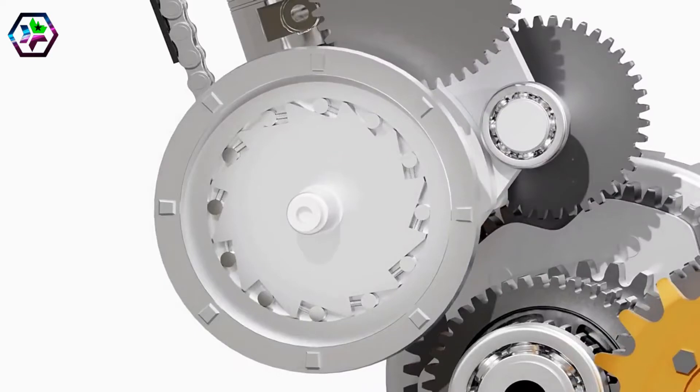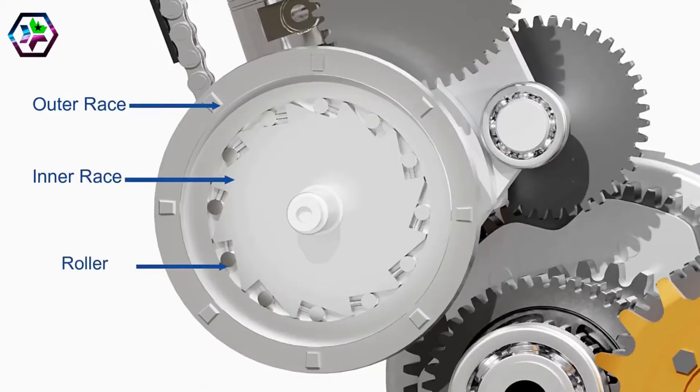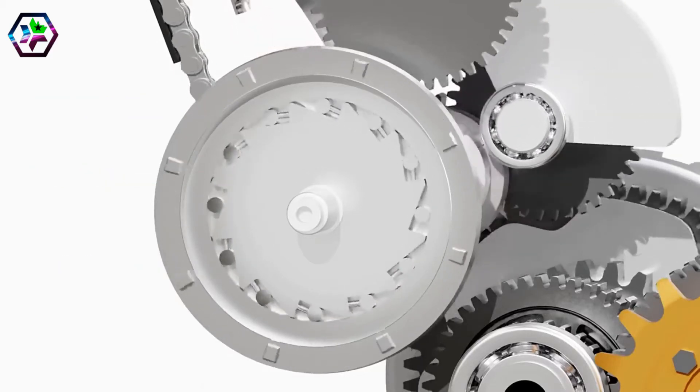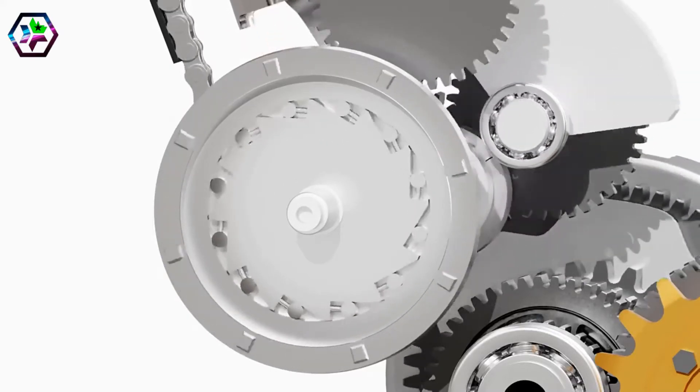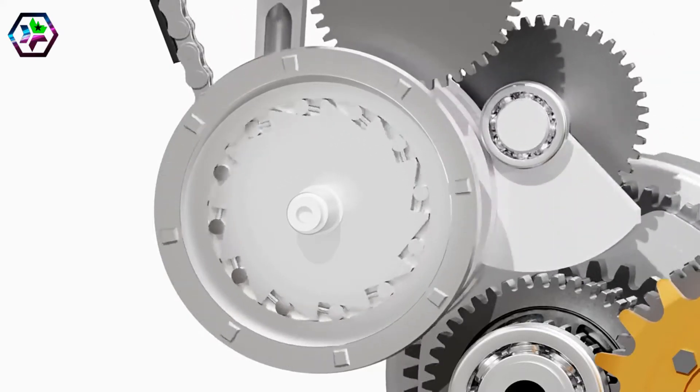The model shown here is of a roller-type one-way clutch. It has an outer race and an inner race with small rollers. As the starter motor spins the outer race in one direction, the rollers get trapped between the surfaces and the power is transferred to the inner race and thus to the crankshaft.